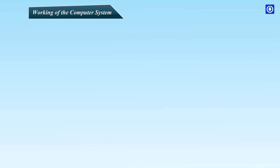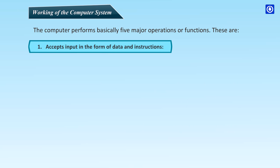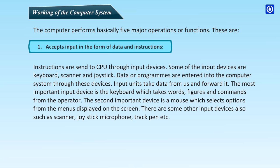Working of the Computer System: The computer performs basically five major operations or functions. First, it accepts input in the form of data and instructions. Instructions are sent to the CPU through input devices. Some of the input devices are keyboard, scanner, and joystick. Data or programs are entered into the computer system through these devices. Input units take data from us and forward it.